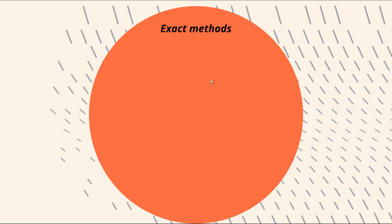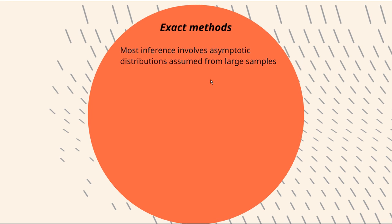Alright so what's exact methods? As I've noted in the intro, most inference involves asymptotic distributions assumed from large samples and often we use the normal distribution in those examples relying on something called the central limit theorem to get us there.